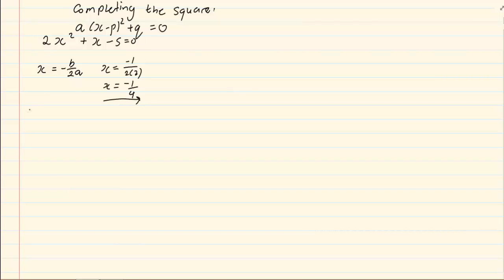Once we have x, we substitute x and we get y. So I am going to take x and put it into the original equation. So I have 2 into minus a quarter all squared plus a quarter minus 5. I am substituting it into the original equation.